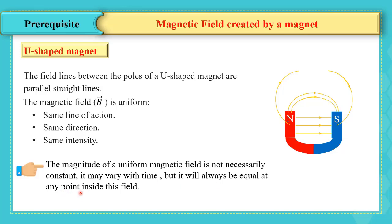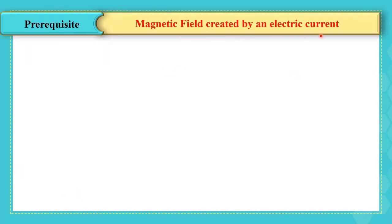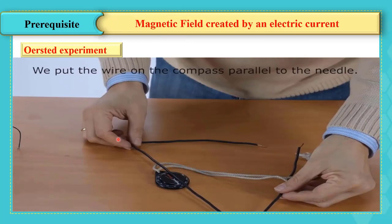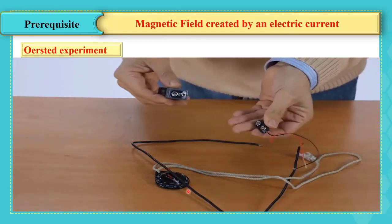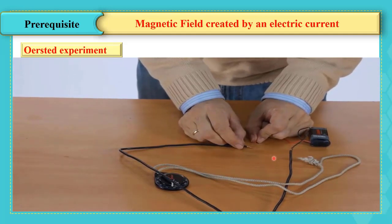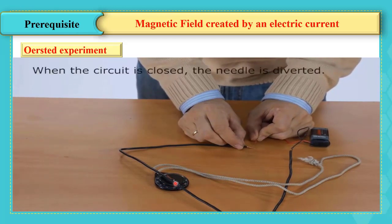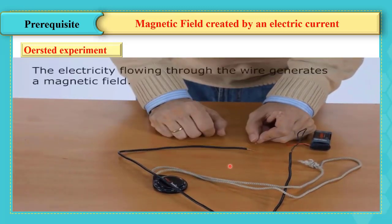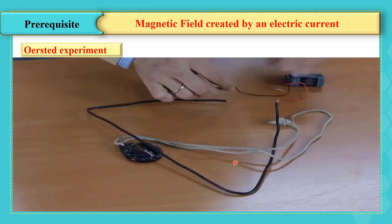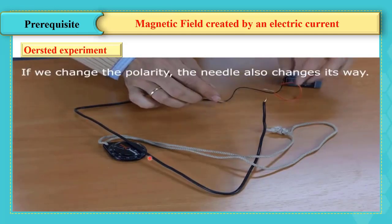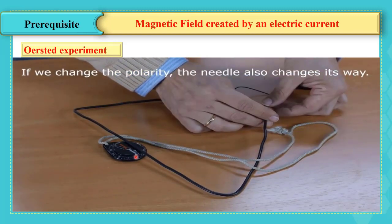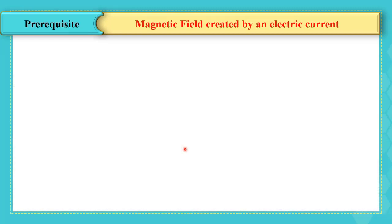To show that the magnetic field can be created by an electric current, let's look at Oersted's experiment. An electric wire is placed above a compass, parallel to it. We connect the wire to a battery. When the circuit is closed, we observe that the needle deviates in a certain direction. We can deduce that the current traversing the wire generates a magnetic field. When we reverse the poles of the battery, the needle changes its direction. As a conclusion, Oersted's experiment shows that a magnetic field can be created by an electric current.